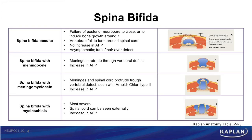The next congenital malformation is spina bifida, which arises due to a failure of the caudal neuropore to close. There are four types. The first type is spina bifida occulta, which arises due to a failure of the vertebral laminae to fuse completely around the spinal cord. This is the mildest form and is asymptomatic, yet affected neonates have a characteristic tuft of hair on the skin overlying the defect. Maternal serum alpha-fetoprotein levels are not elevated in spina bifida occulta.